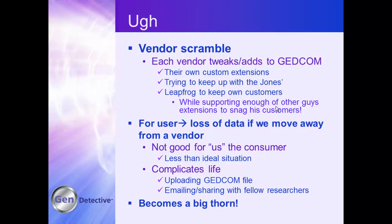They all have unique extensions which overlap — one company may define DNA data and convey it in one form, the second company does it differently, and the third company does it differently still. Some of this is deliberate — trying to keep up with the Joneses, leapfrogging the other guys to keep their own customers. In some ways this is very good — we're getting the same functionality across multiple products — so life is getting better for the consumer, except in this area of sharing and transferring files.